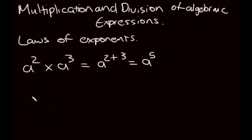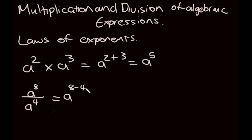The second law of exponents: if we're given a to the power of 8 over a to the power of 4, the bases are the same, so we will minus the exponents — the top exponent minus the bottom exponent. So our answer will be a to the power of 4. Those are the two main laws of exponents we'll be dealing with when looking at multiplication and division of algebraic expressions.